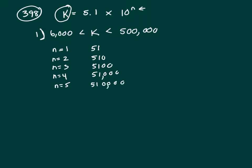One, two, three, four. So if k is between 6,000 and 500,000, not including, between 6,000 and 500,000, there's only one choice. So that means k has to be 51,000. So clue one works.